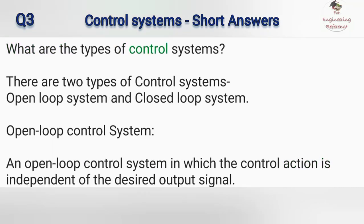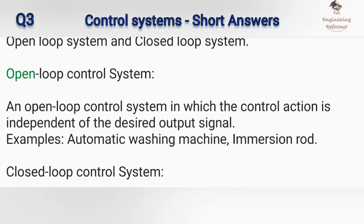What are the types of control systems? There are two types of control systems: open loop system and closed loop system. Open loop control system: an open loop control system is one in which the control action is independent of the desired output signal. Examples: automatic washing machine, immersion rod.